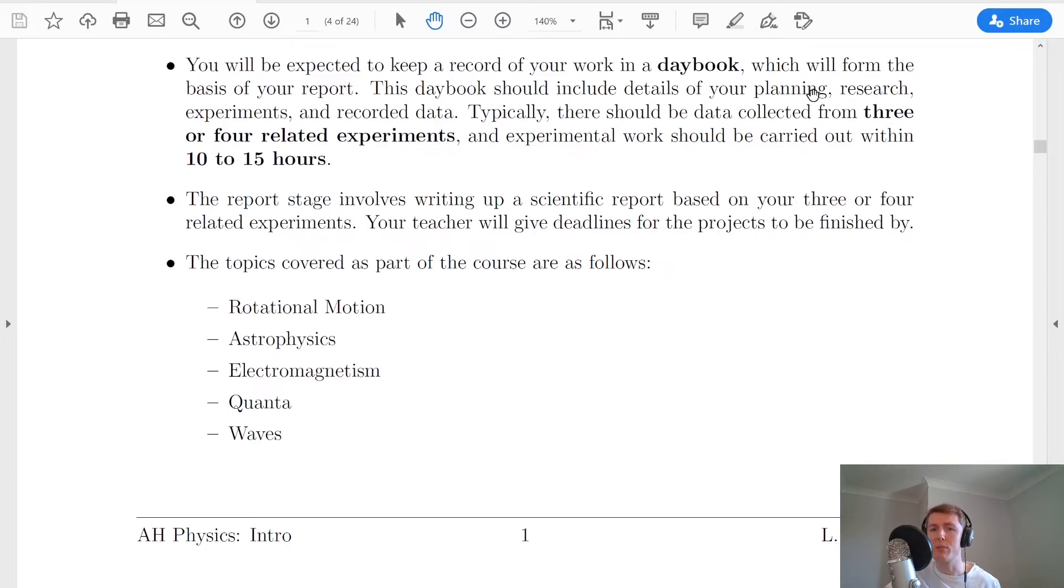Now, your daybook should include details of your planning, the research, experiments and any recorded data that you're taking. Typically, there should be data collected from three or four related experiments, depending on time. And experimental work should be carried out within 10 to 15 hours.